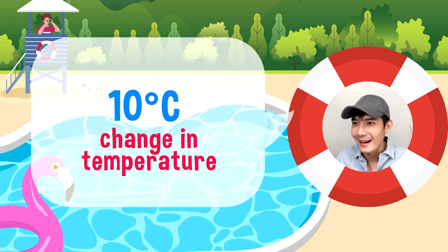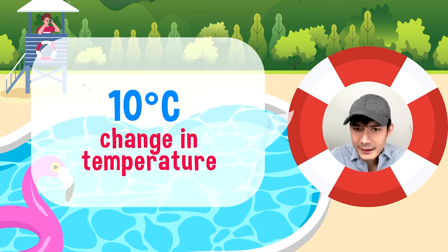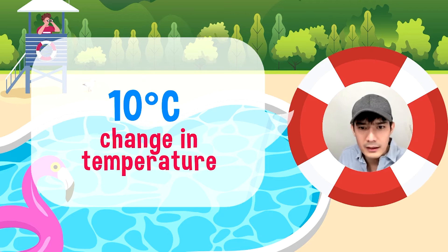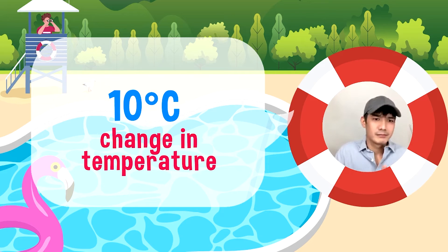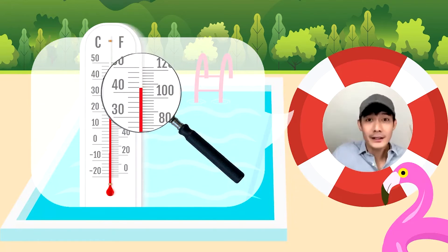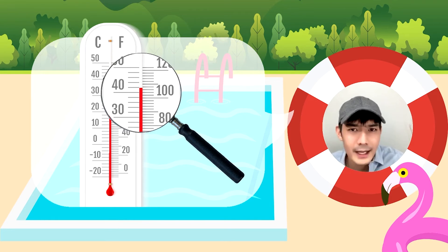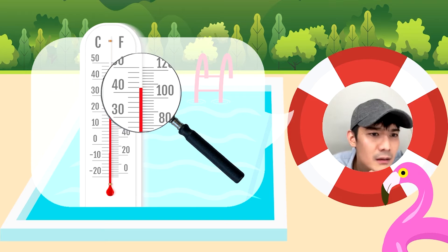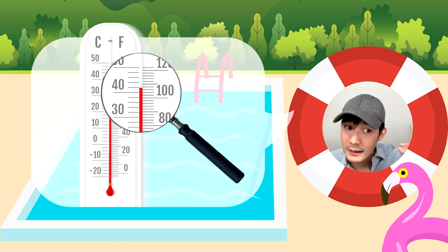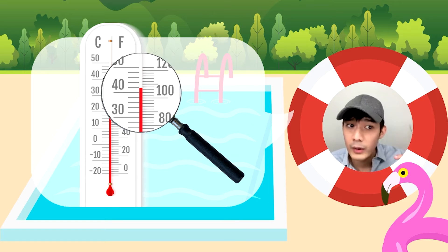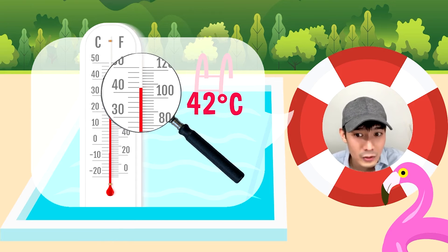Gusto nyo ba magtry ng isa pang pool? Punta tayo sa isa pang pool dito sa Math Dali Spring Resort. At mukhang mas mainit yung pool na ito. Abasahin natin yung temperature. This is sa 40 — sinabi natin kanina by 2, diba? 1, 2. So, 42 degrees Celsius ang pool na ito.